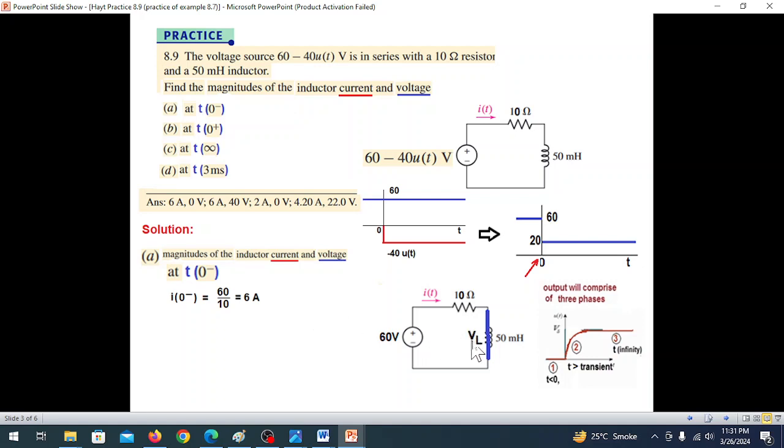To find VL(0-), we use KVL equation. We can write -60 + 10 × i(0-) + VL(0-) = 0. Putting i(0-) = 6, we get -60 + 60 + VL(0-) = 0, so VL(0-) = 0 volts.